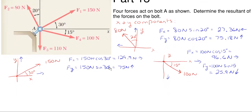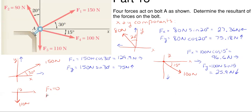The last force is F3, which acts straight down in the y direction at 110 newtons. Whenever a force is directly along one axis, the other component is simply zero — it has no horizontal component. So the x component is 0, and the y component is 110 N downward.